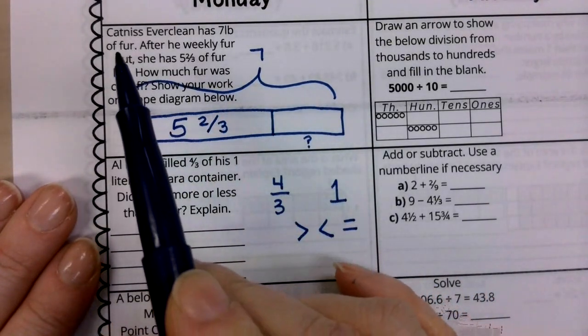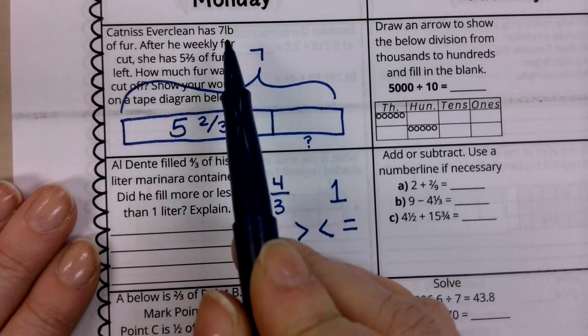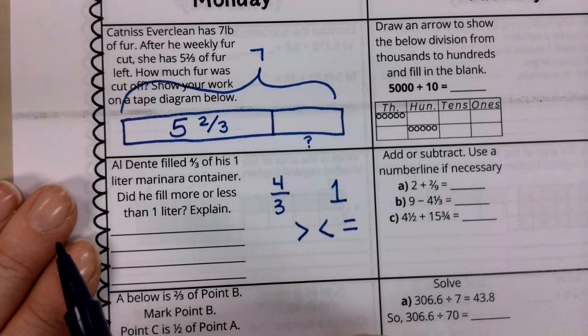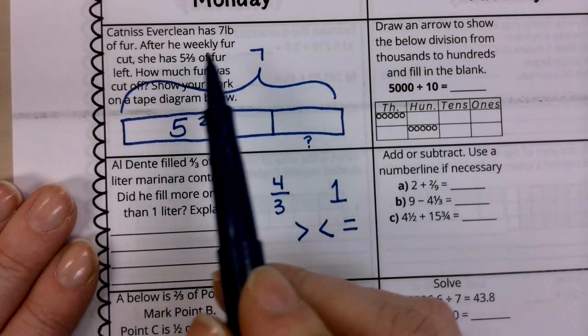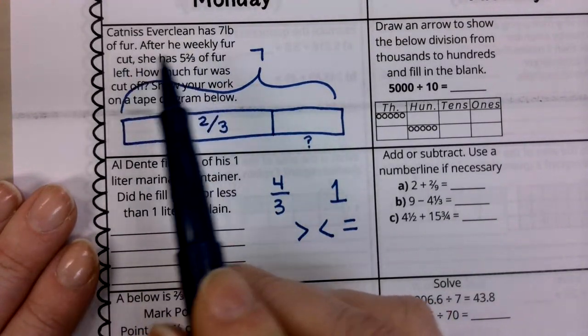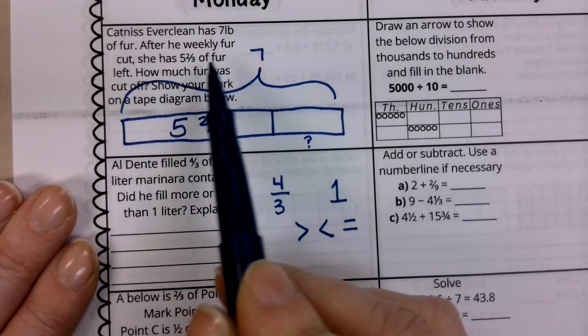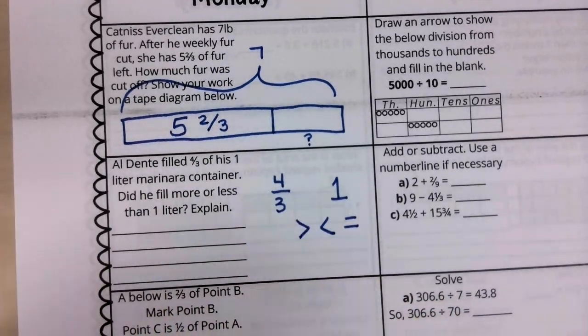So in this question, we have Katniss Everclean, and he has seven pounds of fur. So this entire rectangle represents seven pounds. Now after the weekly fur cut, she has five and two thirds of fur left.